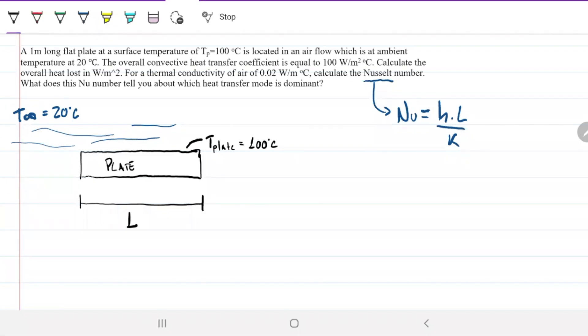A one meter long flat plate at a surface temperature of 100°C is located in an air flow which is at ambient temperature 20°C. The overall convective coefficient is equal to 100 watts. It's probably incorrect, it's probably a typo. I don't think it would be there, I'll just throw you off.